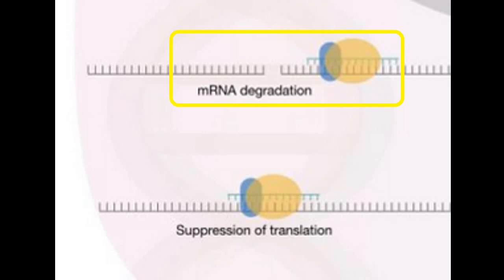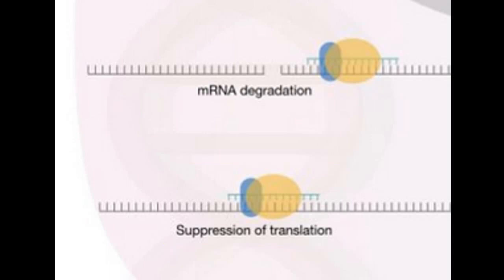In another mechanism, if the RNA-induced silencing complex fails to find the complementary strand, it still binds to the target mRNA and aborts translation, which ultimately prevents protein formation. Thus, in either mechanism, a gene cannot be expressed.